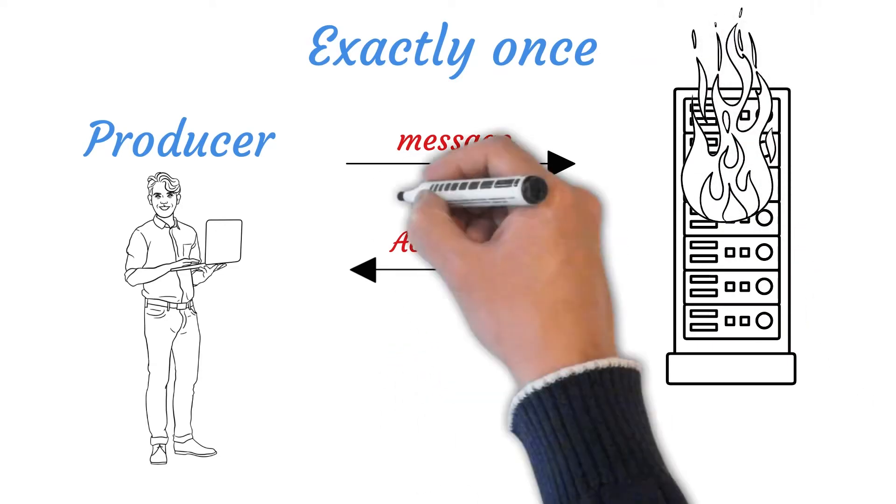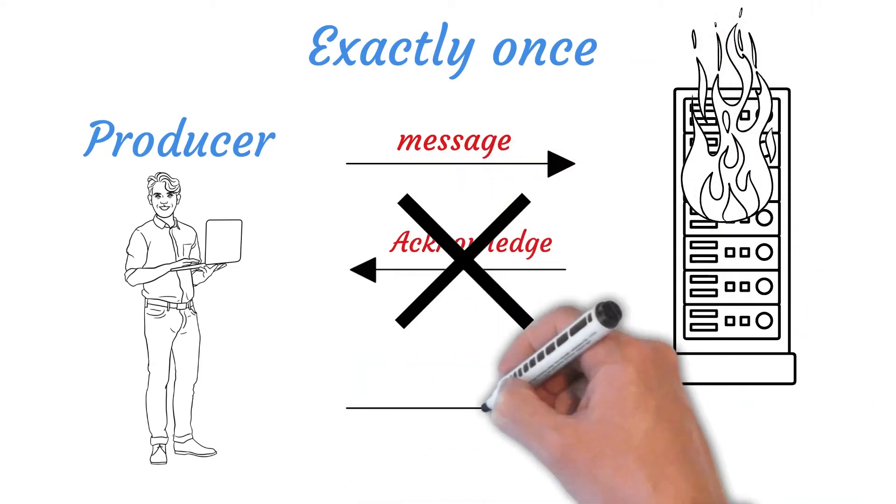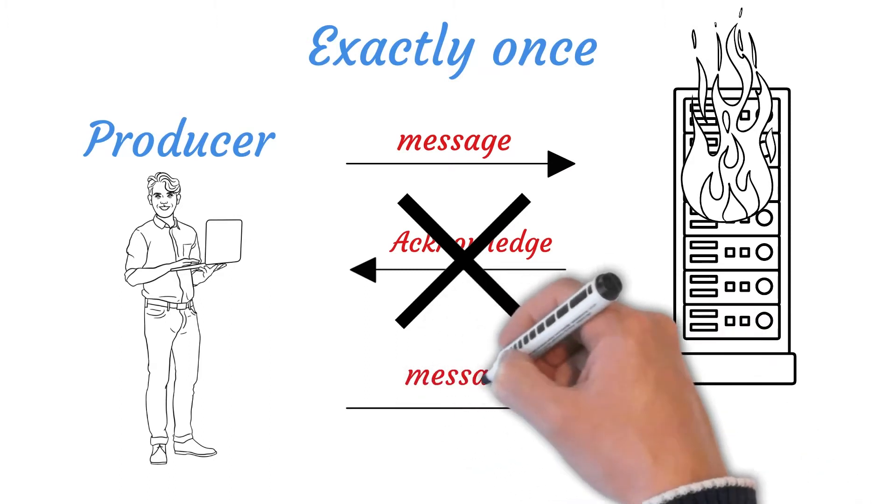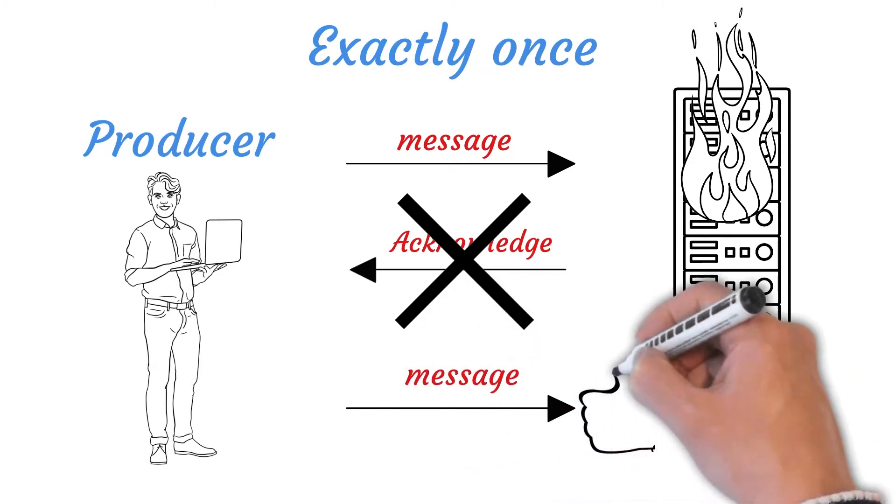Because of this, exactly once carries the highest implementation overhead and highest cost, as well as potentially the worst performance of all of the delivery semantics.